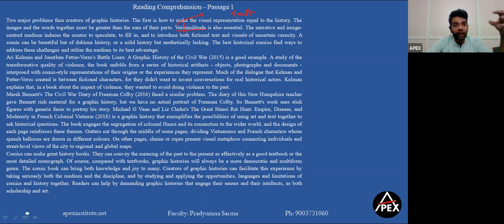The narrative and image-centered medium includes the creator to speculate - speculate is to guess - to fill in and to introduce both fictional text and visuals of uncertain veracity. Now what is veracity over here? Again we can see this from the root and we can understand that here veracity means accuracy. All right, so a comic can be beautiful but of dubious history. What is dubious? Dubious we can understand over here as not to be trusted.